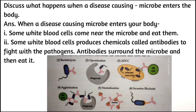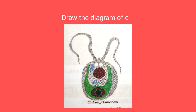Discuss what happens when a disease-causing microbe enters the body. When a disease-causing microbe enters your body, some white blood cells come near the microbe and eat them. Some white blood cells produce chemicals called antibodies to fight the pathogens; the antibodies bind the microbe and then destroy it.